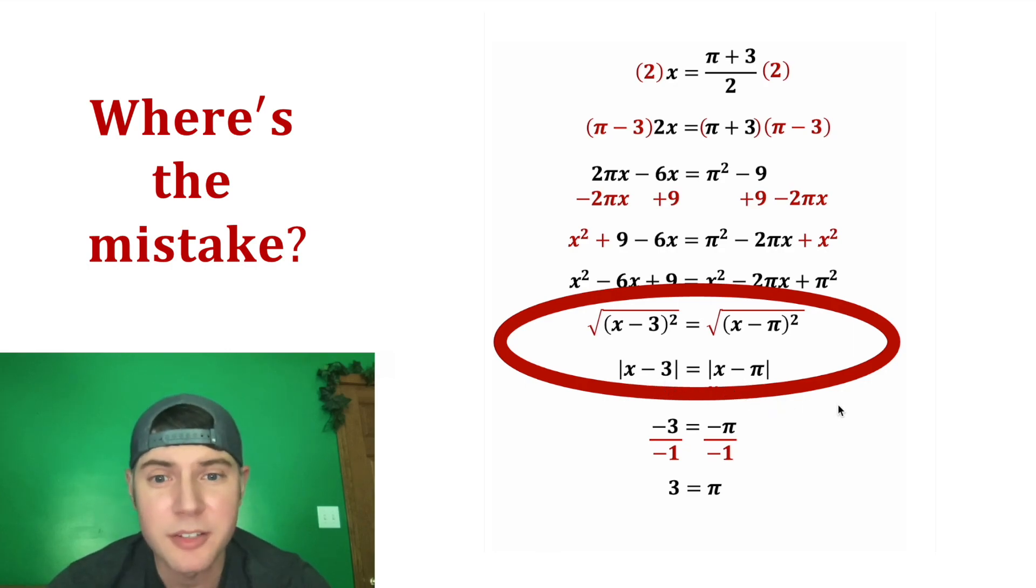And we can actually work with this. So we do know what x is equal to. x is equal to this pi plus 3 over 2. And that is approximately equal to 3.07.